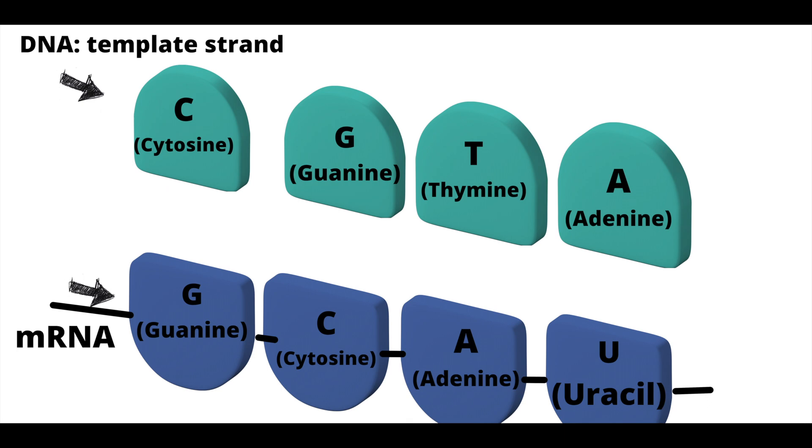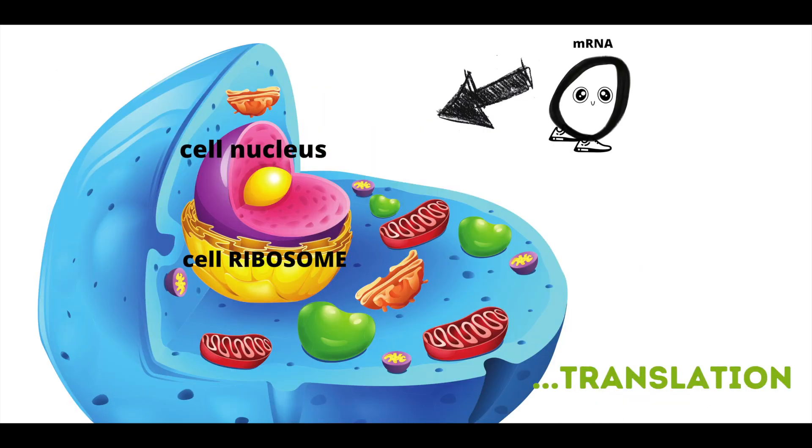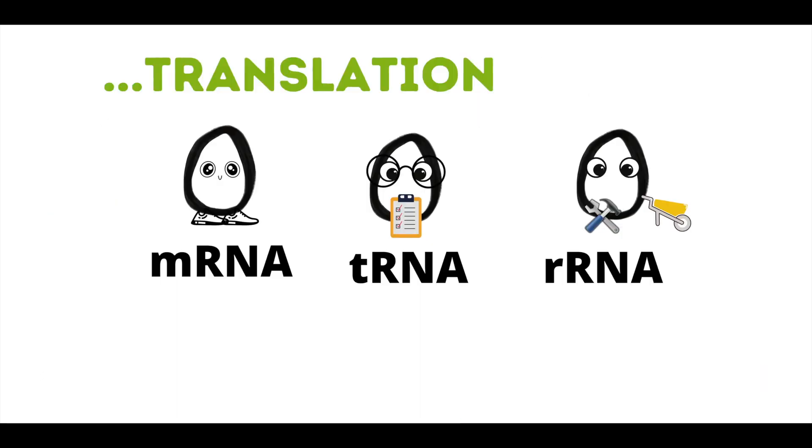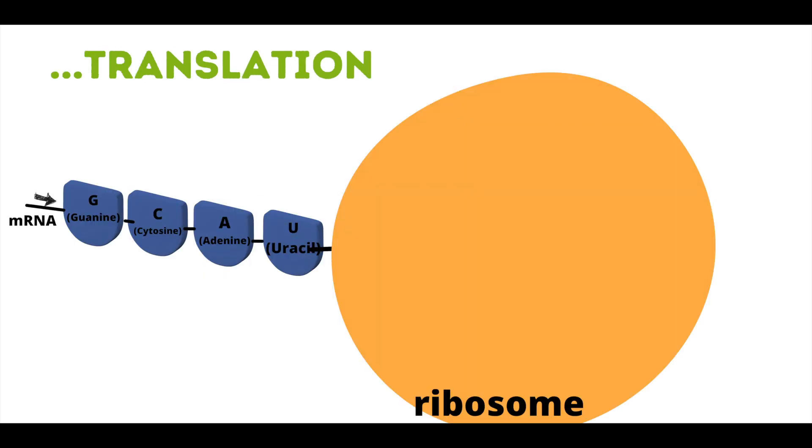After mRNA is made, it travels to a ribosome where translation begins. mRNA has information from DNA and takes it to the ribosome, which is like a manufacturing place where things are made. With the help of tRNA and rRNA, they create a protein in the ribosome.